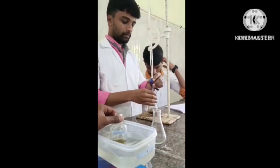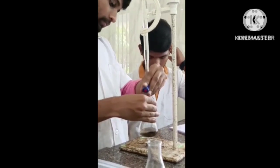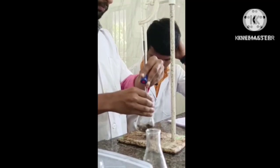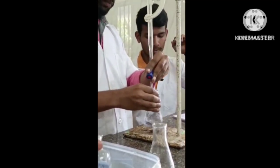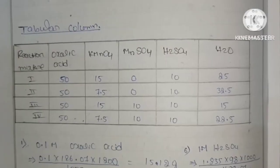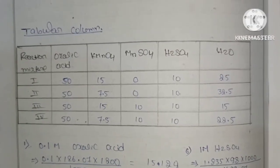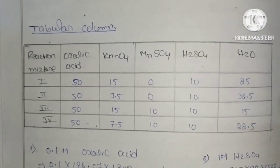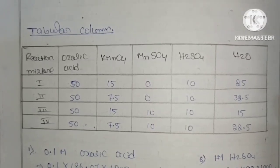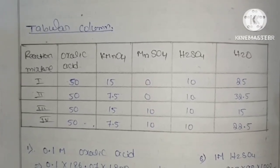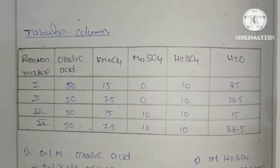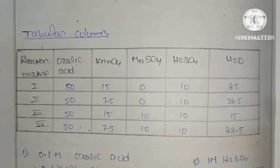Then titrate it again against sodium thiosulfate until the color becomes colorless. The reaction mixture contains oxalic acid, potassium permanganate, manganese sulfate, sulfuric acid, and water. For reaction mixtures 1 and 2, there is no requirement of manganese sulfate. For reaction mixtures 3 and 4, we require 10 ml of manganese sulfate.